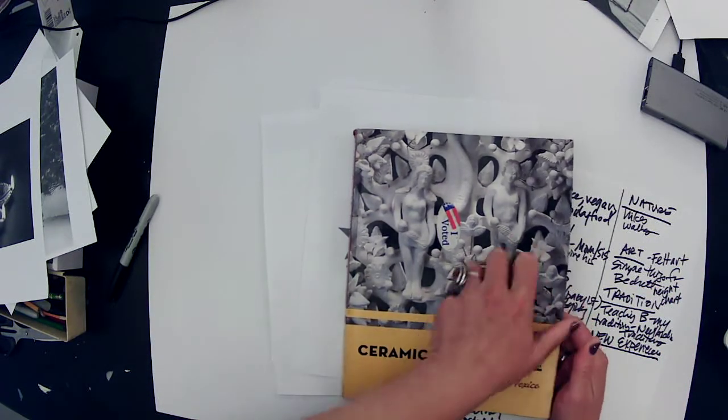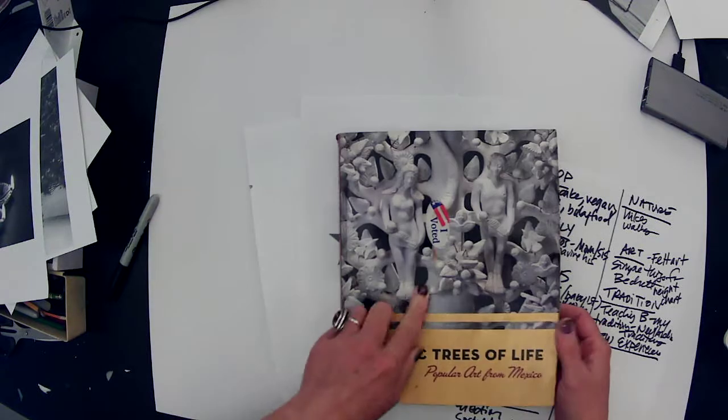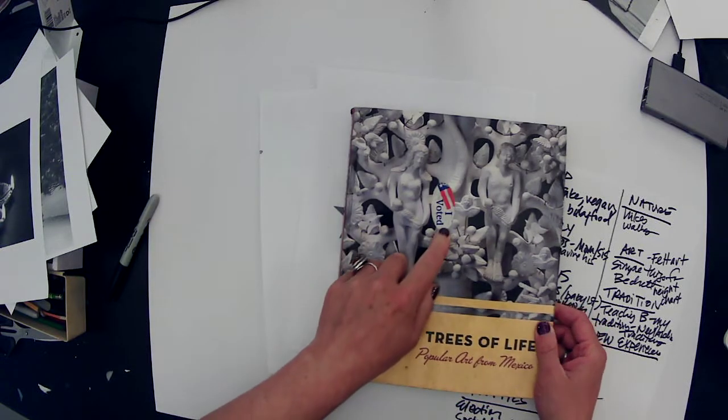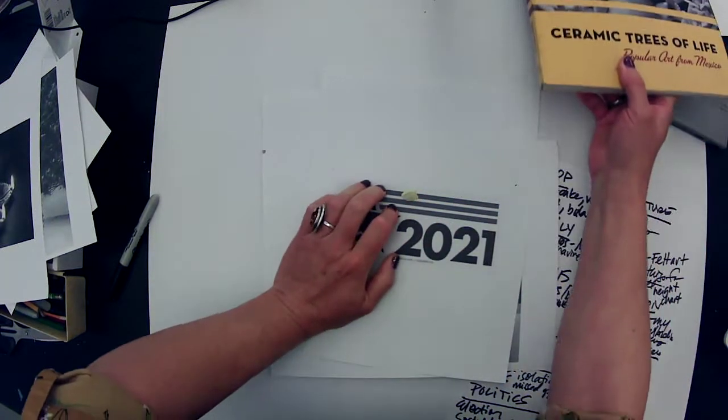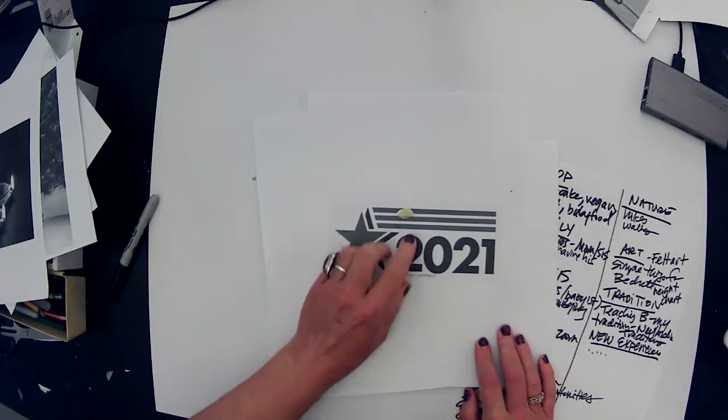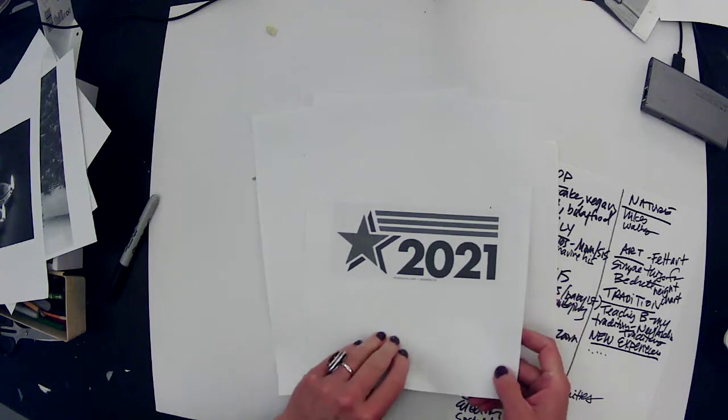I was thinking about maybe including my I voted sticker. That's kind of ironic, this is sitting here. This is a Mexican tree of life book that I have, and I guess apparently one year I voted the day I was using this book in class and I stuck my I voted sticker on it. But I have one from this year that I could include in my box, so that would be neat.